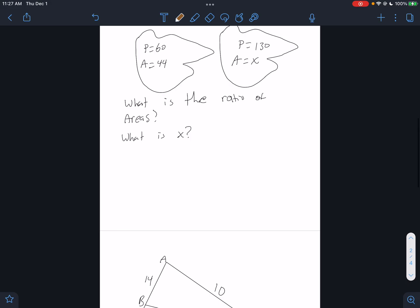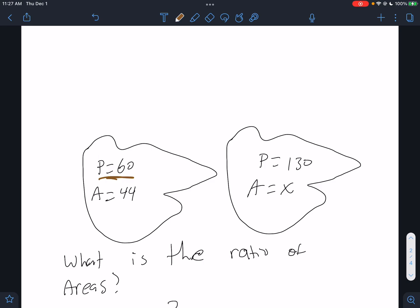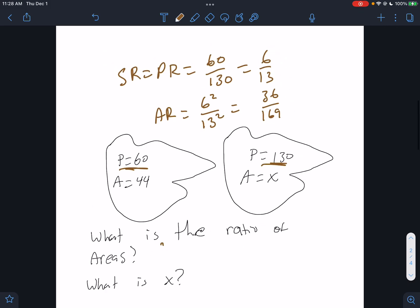Here we have perimeters and areas. What is the ratio of the area? So let's check out what we have. We have a perimeter of 60 and a perimeter of 130. Remember that the similarity ratio is equal to the perimeter ratio, which on this problem is 60 over 130. That reduces to 6 thirteenths. The area ratio will equal 6 squared over 13 squared, which is 36 over 169. Got it.